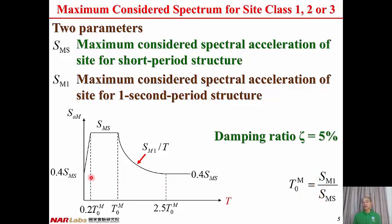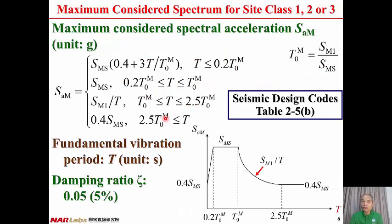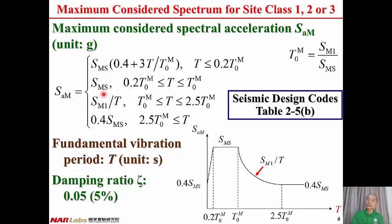We can use just two parameters to fully describe the maximum considered spectrum. The spectrum can be divided into four segments. In the first segment, it increases linearly with the structural period T. In the second segment, SAM is constant and equal to SMS. In the third segment, SAM decreases inversely proportional to the structural period T; SAM equals SM1 divided by T. For the fourth segment, SAM equals the lower bound of 0.4 times SMS.